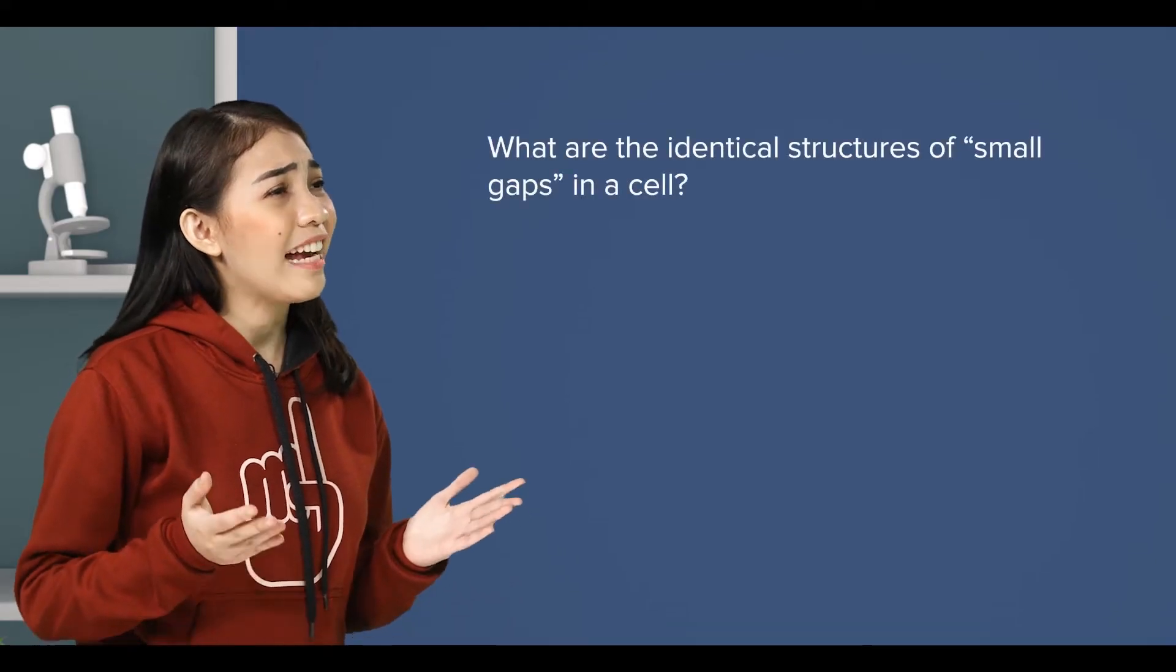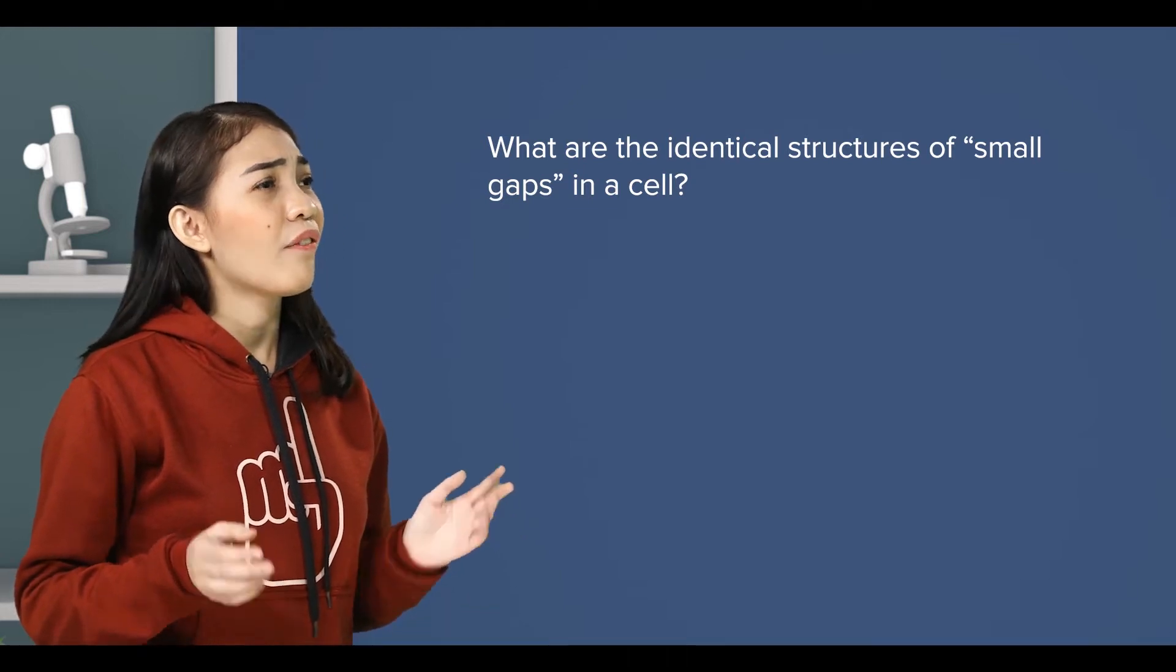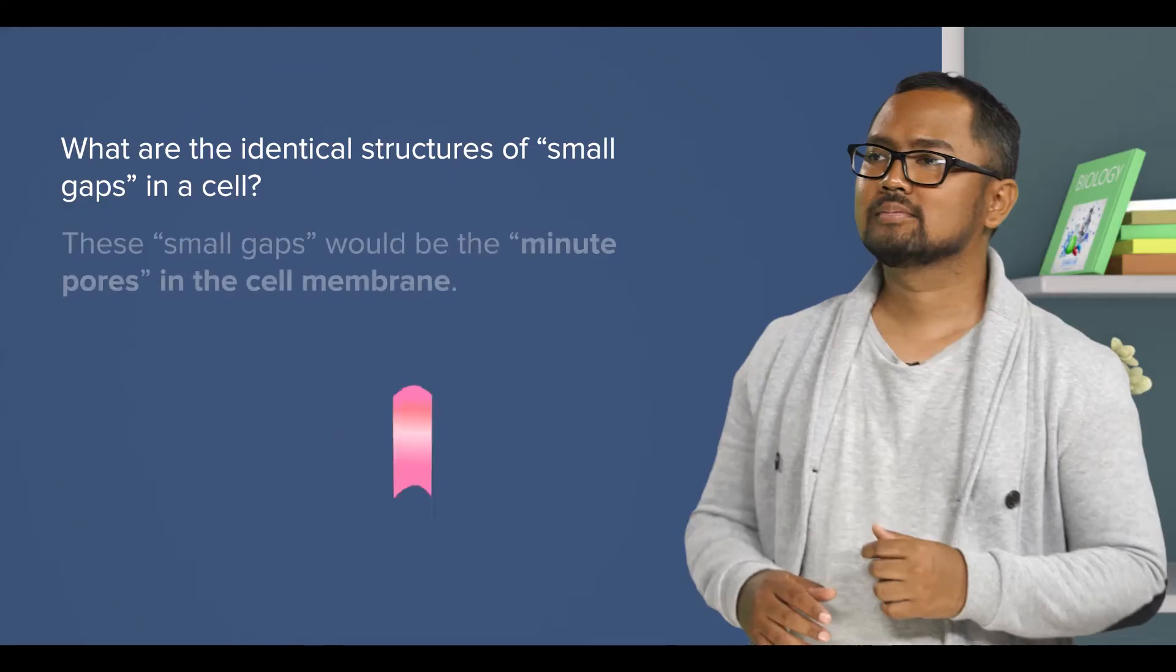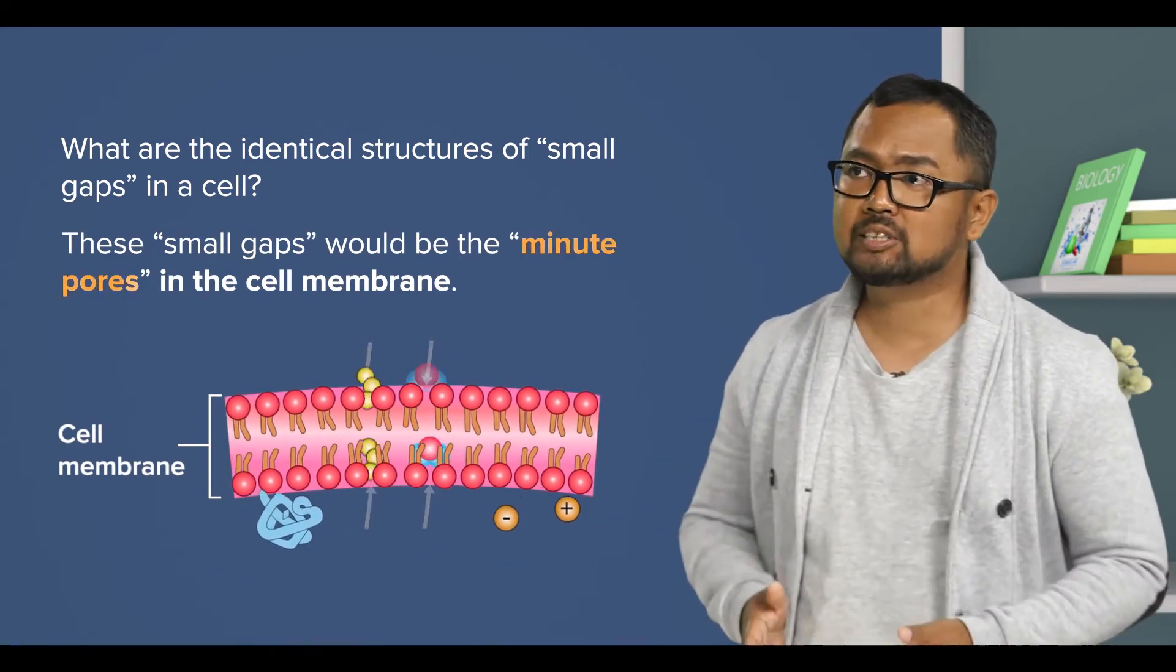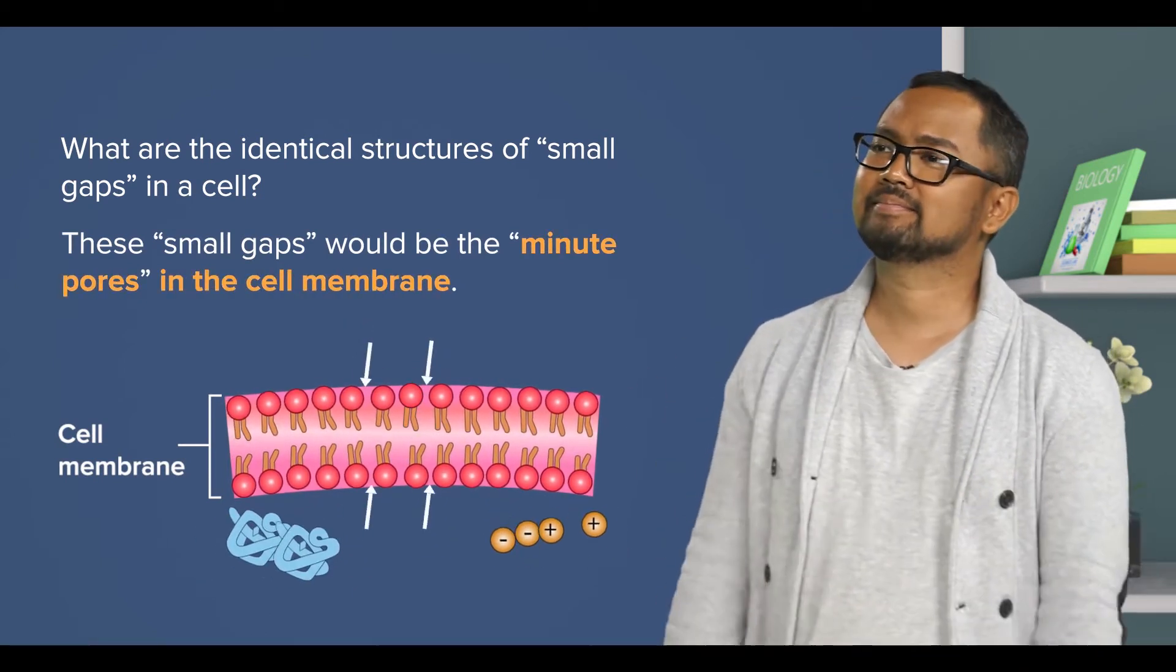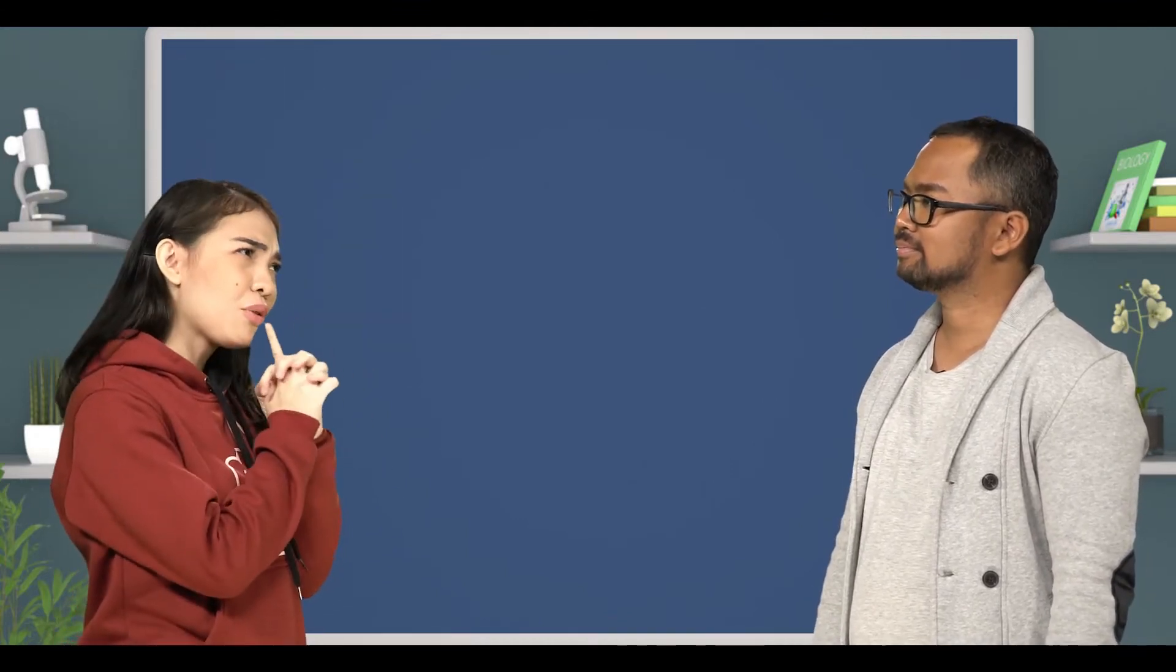So, what are the identical structures of small gaps in a cell? These small gaps would be the minute pores in the cell membrane. I see. Just to confirm,